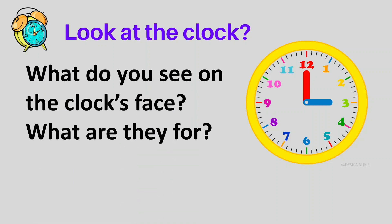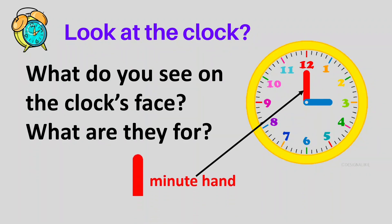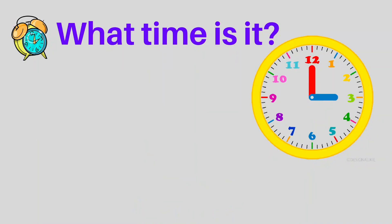What do you see on the clock's face and what are they for? The arrow pointing at the red strip is the minute hand — that's the long hand. The arrow pointing at the blue strip is the hour hand, or the short hand.